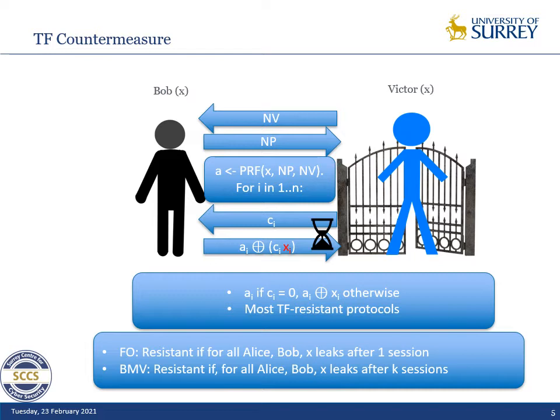There are two main schools of thought regarding terrorist fraud resistance. We have the model by Fischlin and Honete, which we call FO, where they say that the protocol is terrorist fraud resistant if for all Alice and Bob, X leaks after one session if Alice is helped by Bob.